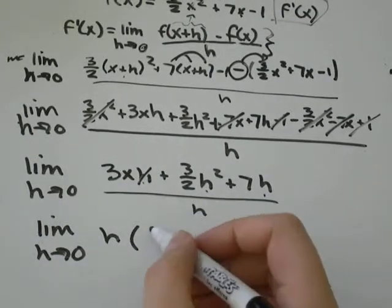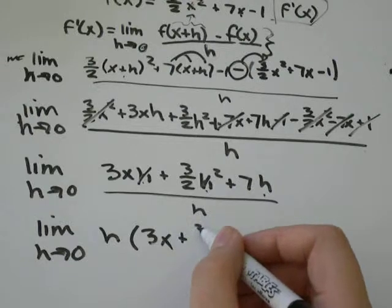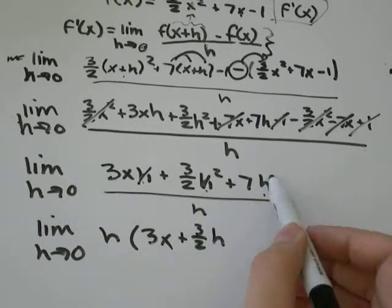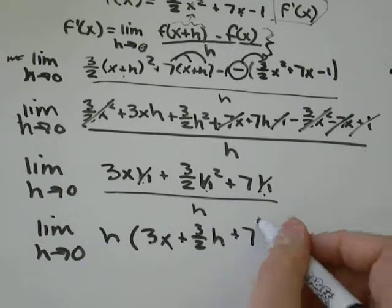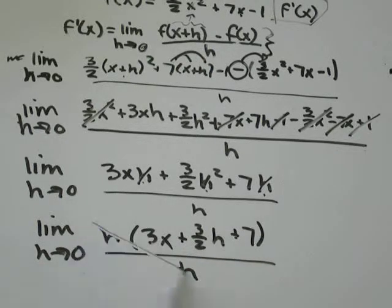If I get rid of the h, I'm left with 3x. If I get rid of one h from here, I'm left with 3 over 2h. If I get rid of the h from here, I'm just left with positive 7. And now a miracle has occurred because our h's cancel out.